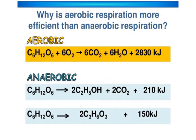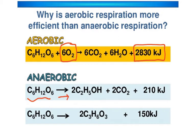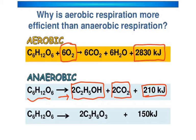Aerobic respiration is much more efficient than anaerobic. In aerobic respiration, 2830 kilojoules of energy are released, while in anaerobic respiration in yeast, only 210 kilojoules are released, producing ethanol and carbon dioxide. In muscles, lactic acid is produced with even less energy released. This is because in aerobic respiration the glucose molecule is completely broken down, whereas the products of anaerobic respiration still have energy remaining in them.